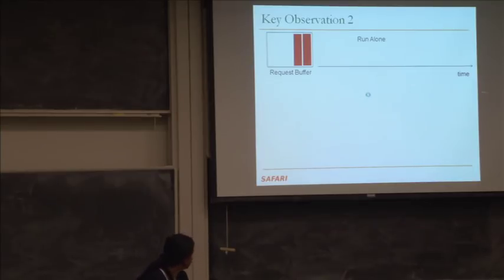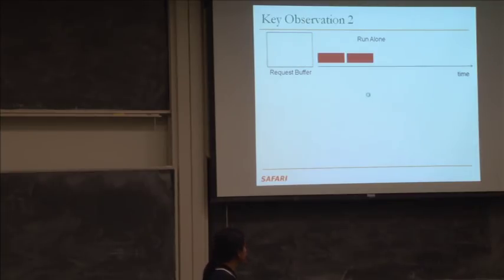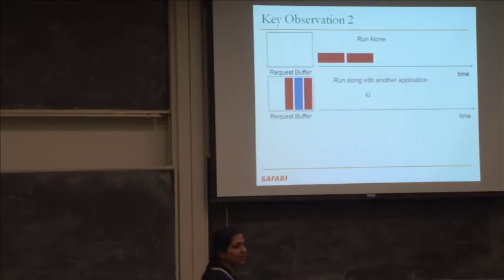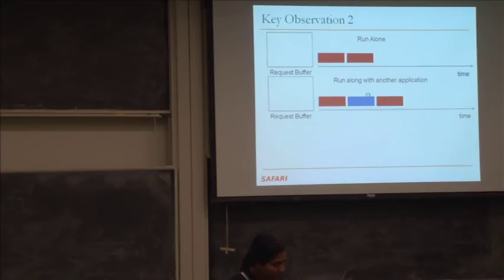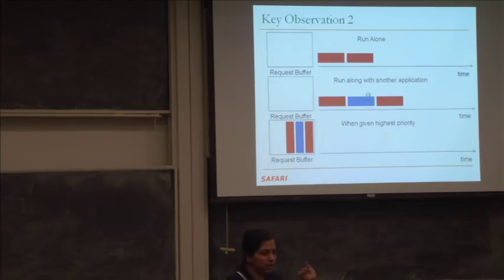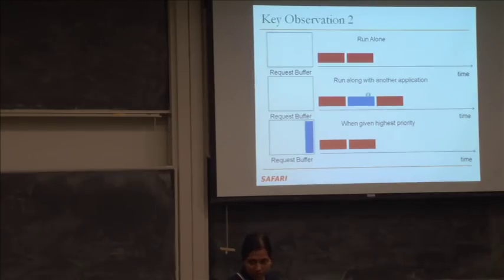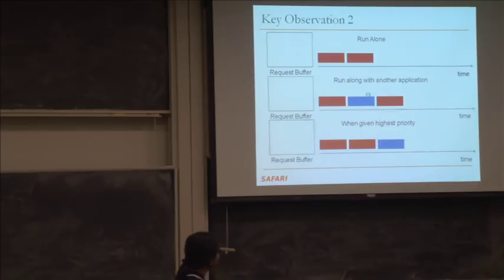Our second observation: when an application runs alone, its requests are serviced back-to-back with no interference. When a second application is added, the first application's requests may wait behind the second application's requests and stall longer. However, if we give the red application highest priority at the memory controller, both of its requests get serviced back-to-back whenever they appear in the request buffer — just as if running alone. This insight allows us to estimate the alone request service rate even when running with other applications.